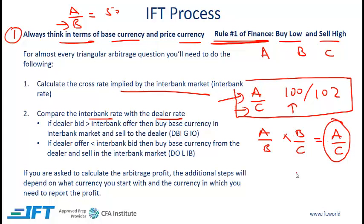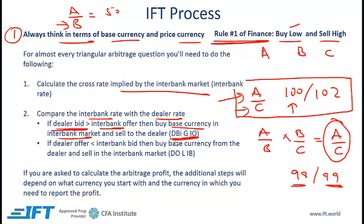Let's say we do this calculation and we end up with 98/99 — so in the interbank market the implied A/C bid is 98 and the offer is 99. Now: if the dealer bid is greater than the interbank offer, then buy the base currency in the interbank market and sell to the dealer. This is rule number one — buy low, sell high — and the way you remember this is using the acronym DEBIGIO: Dealer Bid Greater than Interbank Offer. DEBIGIO means there is an arbitrage opportunity.